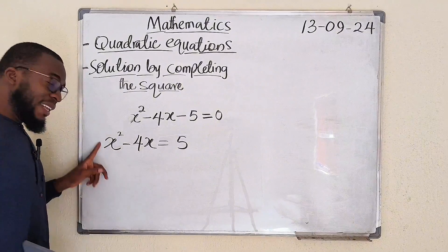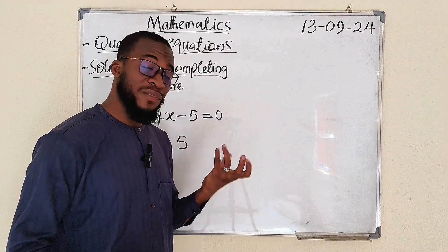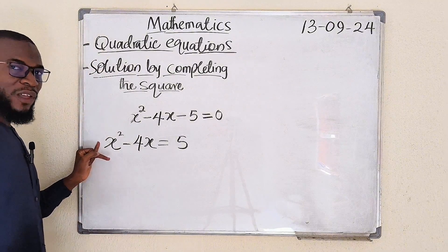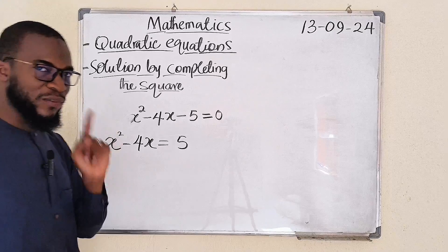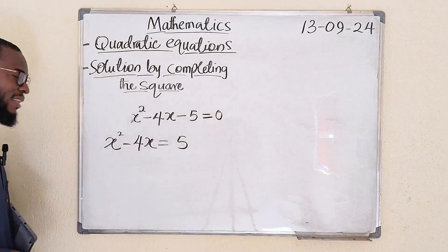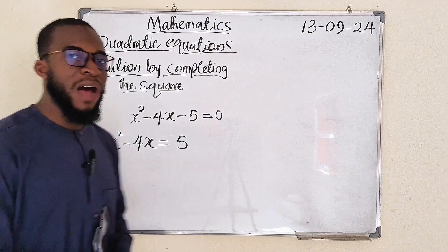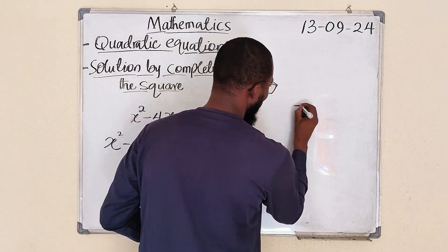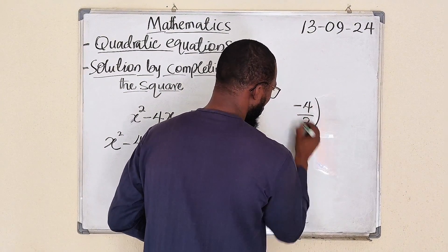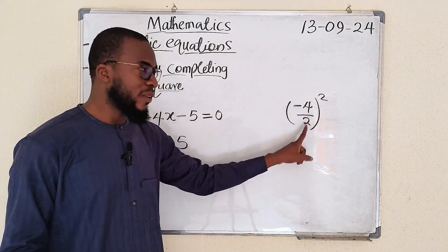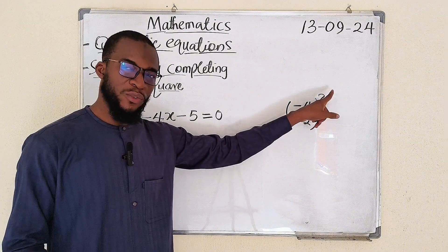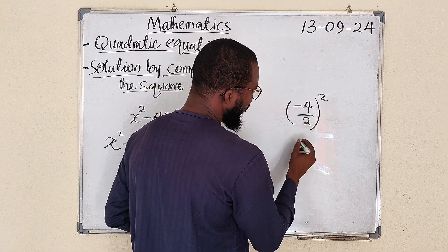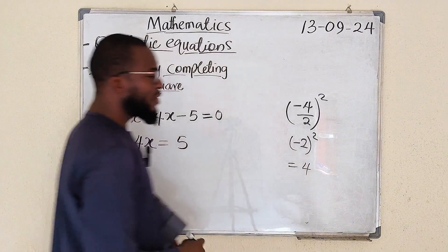Second step: if the leading coefficient is not 1 — because the leading coefficient, which is a, can be 1 or any other value apart from 0 — if we have a value other than 1, divide all three terms by that leading coefficient. After that, step 3 is to add on both sides the square of half of the coefficient of x. The coefficient of x here is negative 4. Divide by 2, all squared. Negative 4 divided by 2 gives negative 2, and negative 2 squared gives 4. So we are adding 4 on both sides: x squared minus 4x plus 4 equals 5 plus 4.